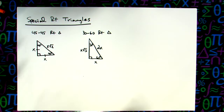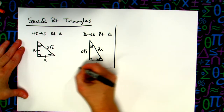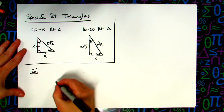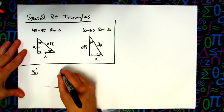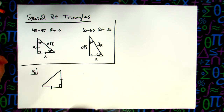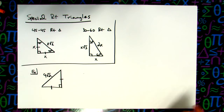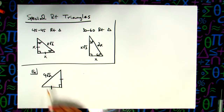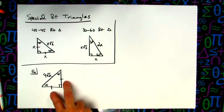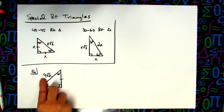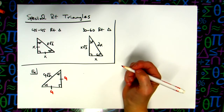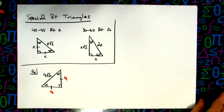Let's do a quick 45-45 example. I'll flip the triangle around. If the hypotenuse is 9√2, the hypotenuse formula is x√2, so x = 9. That means both legs equal 9. Sometimes depending on which side is given, this is very straightforward.